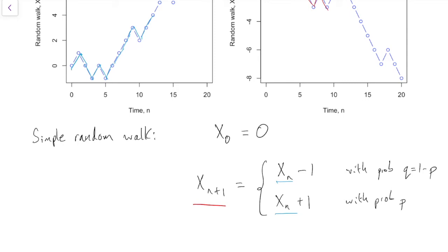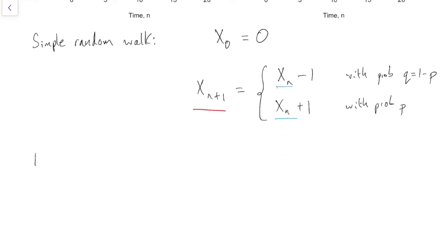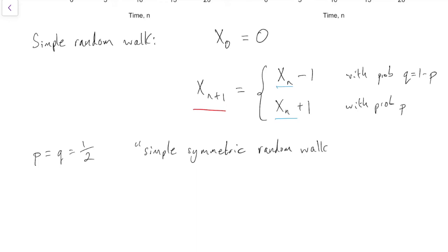An important special case in the simple random walk is the case where p equals q equals a half. So in that case we're equally likely to take a step up as a step down. That's called the simple symmetric random walk, because it's symmetric — it goes up just as often as it goes down in the long run. There will be various places in the course where the simple symmetric random walk will be particularly important compared to the other simple random walks.